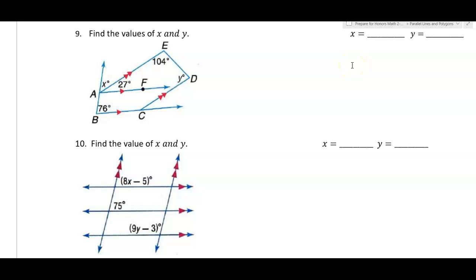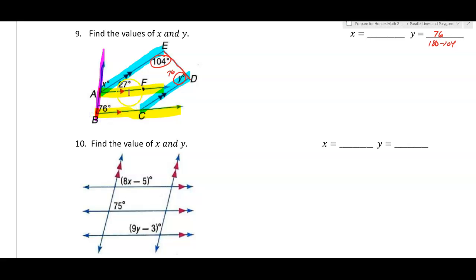Example nine. This line is parallel to this line and this line is parallel to this line. The easiest angle to find is y — using this transversal, 180 minus 104 gives y equals 76 degrees. For x, using this transversal with the yellow lines, x plus 27 and 76 are corresponding angles, so x plus 27 equals 76. Then 76 minus 27 gives x equals 49 degrees.